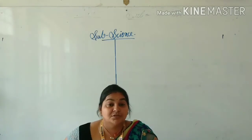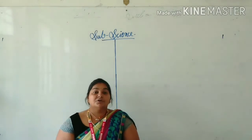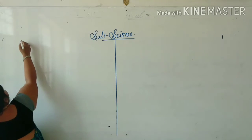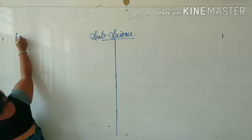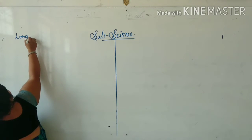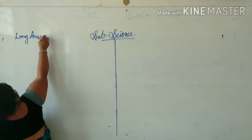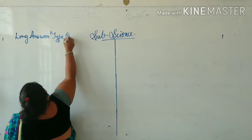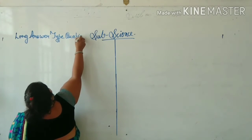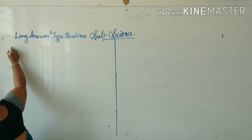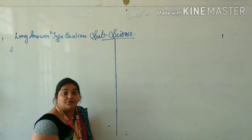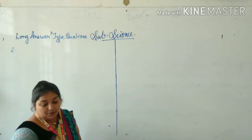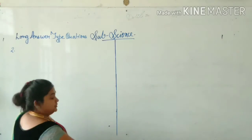Question number 2 is: what are decomposers and scavengers, and how are they useful to us? So what is today's lecture topic? It is the long answer type questions. Take out your books so that you will be able to write and complete on time with me. I have already told you that question number 2 is about decomposers and scavengers and how they are useful to us.